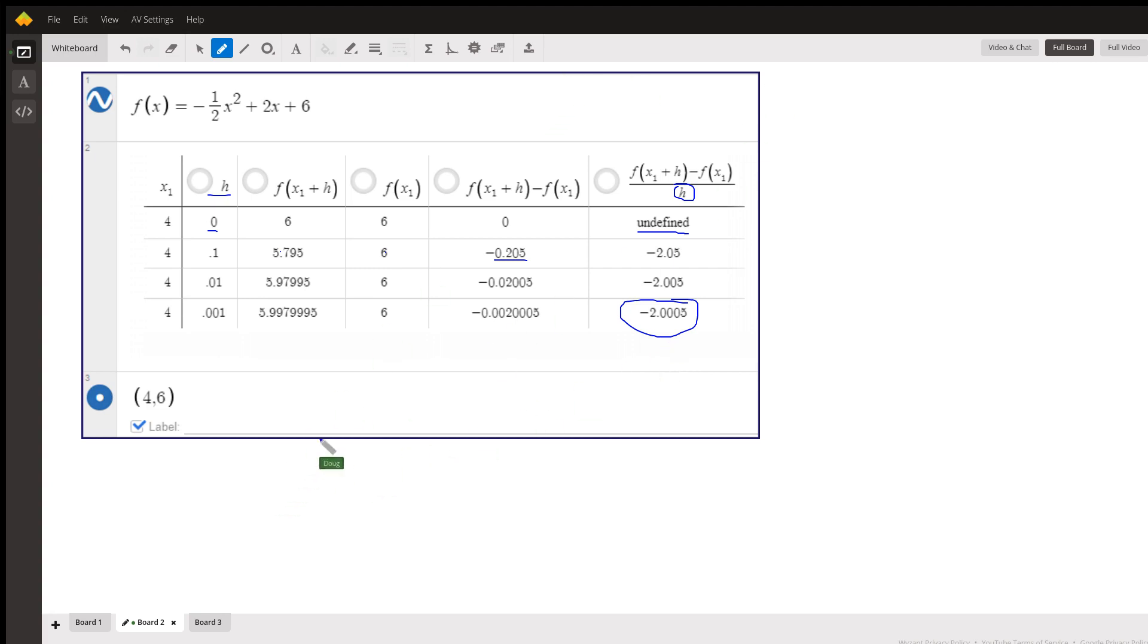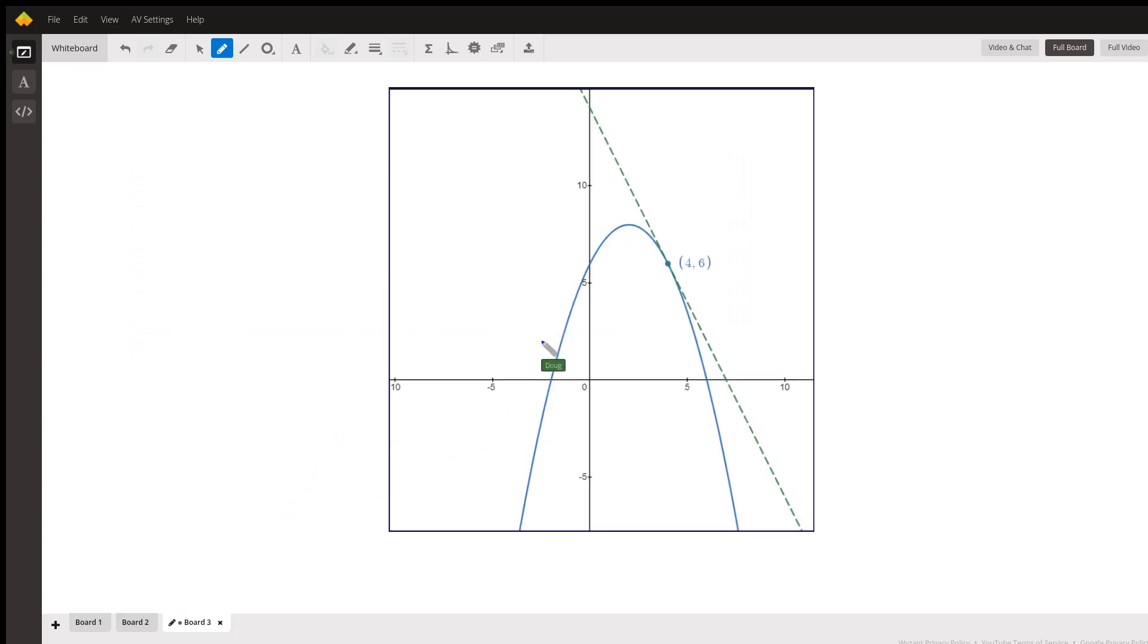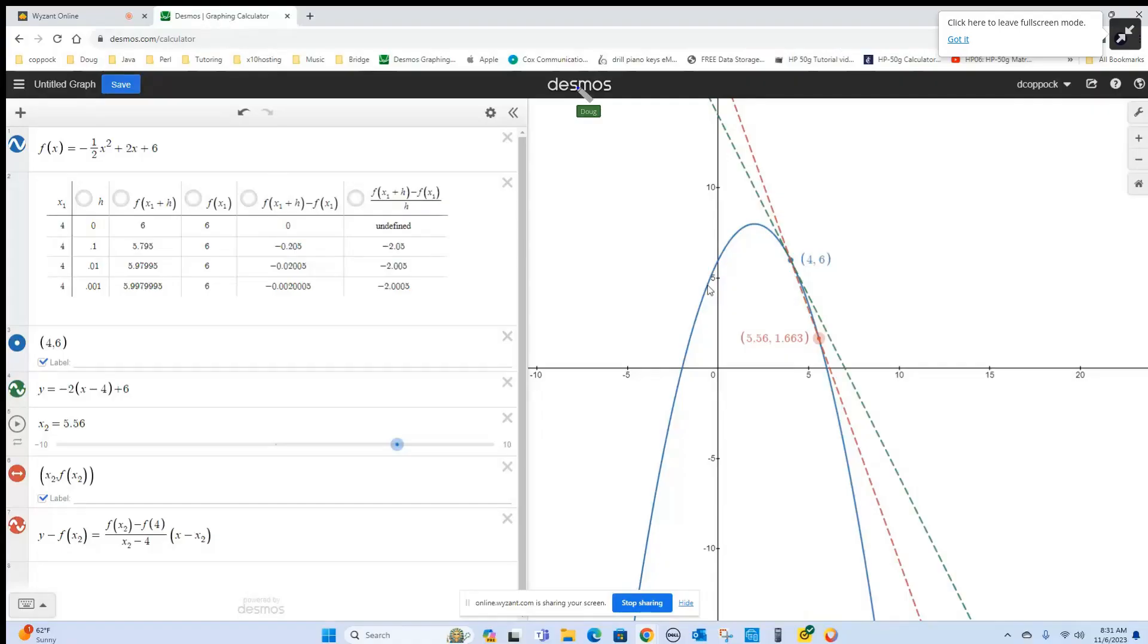So there's actually the graph with the tangent line. I'm going to share my screen, go to Desmos, so you can see what's happening. There's the graph of f(x), that downward-opening parabola, and I've picked another point on the curve.